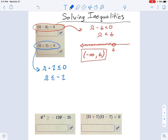If I make a line graph, I've got -2 here. And now it's a closed dot because all the values less than -2, including -2 itself, are acceptable solutions.